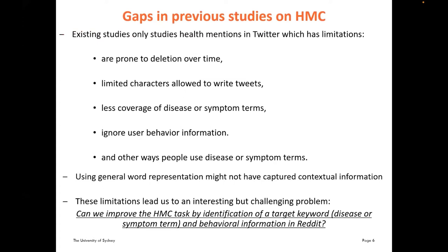Gaps in previous studies: existing studies only examined health mentions in Twitter, which has limitations. Tweets are prone to deletion over time, limited characters are allowed, and there is less coverage of disease or symptom terms in all existing HMC datasets. All previous methods ignore user behavior information and other ways people use disease or symptom terms. Additionally, using general word representations may not capture sufficient contextual information. These limitations lead us to ask: can we improve health mention classification by identifying target keywords and incorporating behavioral information from Reddit?